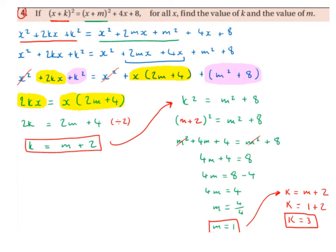Now we put like to like with the constants — any term that does not have an x or x squared attached to it. On the left-hand side we have k squared, and on the right-hand side we have m squared plus 8, so k squared equals m squared plus 8. We substitute k with m plus 2 in brackets, giving us m plus 2 squared, which is m plus 2 times m plus 2, equalling m squared plus 4m plus 4.